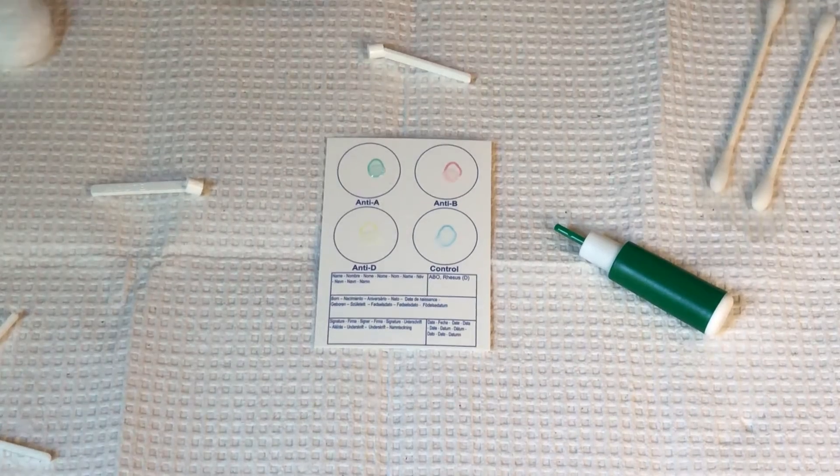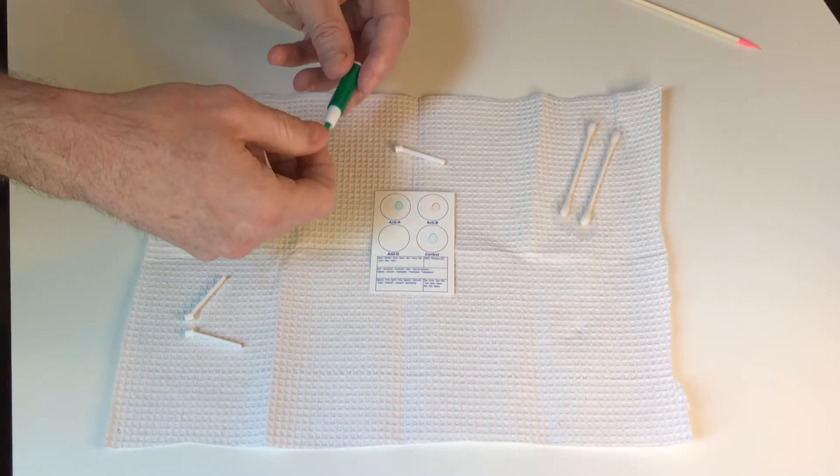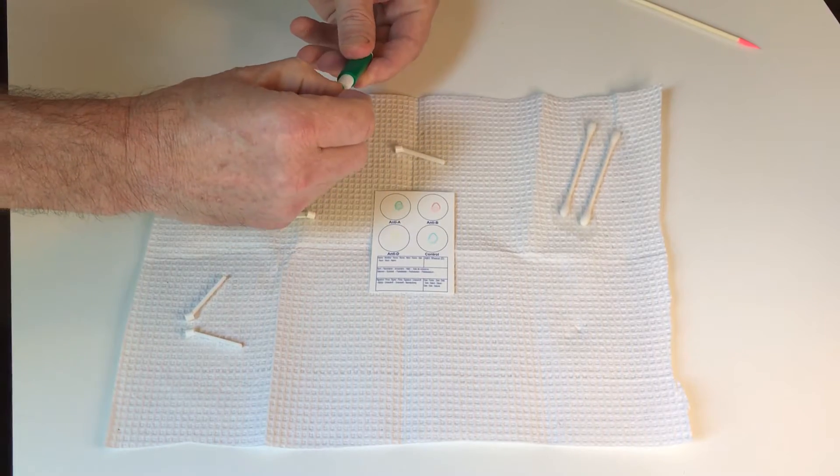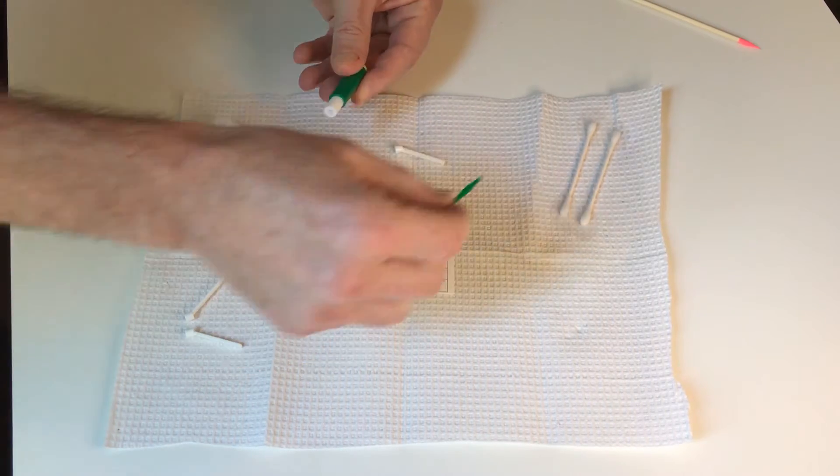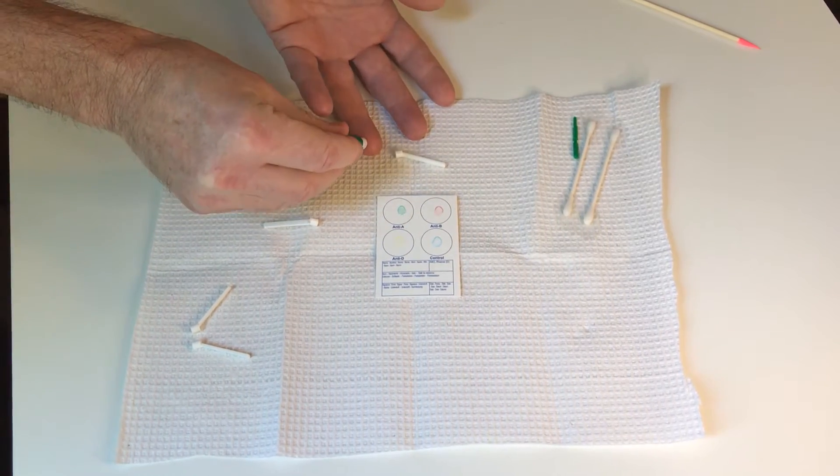I've already rubbed my finger and cleaned it and washed it. Here I have a little poker. I'm just going to twist that, pull it out, place my finger on the table and give it a poke.